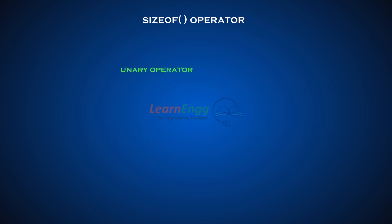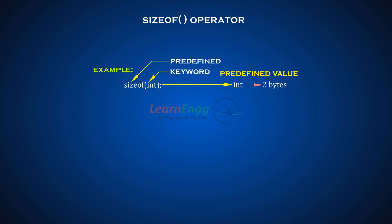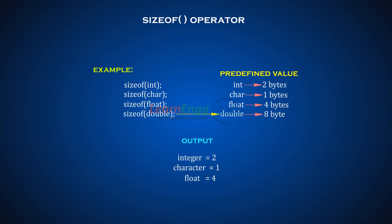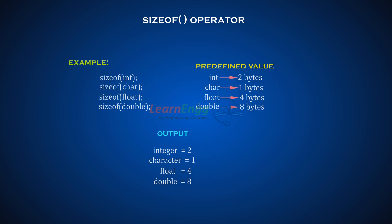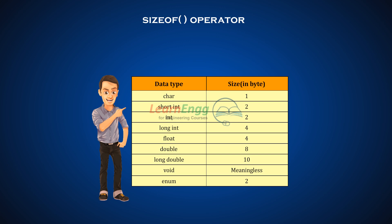The sizeof operator is a unary operator used to find the size of a data type, constant, array, structure, etc. For example, sizeof(int) returns 2 bytes, sizeof(char) returns 1 byte, sizeof(float) returns 4 bytes, and sizeof(double) returns 8 bytes. The following table describes data types and their sizes in bytes, where the highest size data type is long double and the lowest is character.